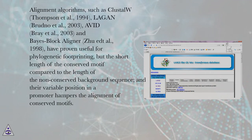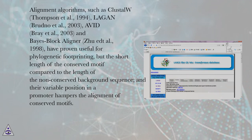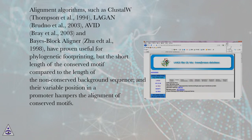Alignment algorithms such as ClustalW (Thompson et al., 1994), LAGAN (Brudno et al., 2003), AVID (Bray et al., 2003), and VASE Block Aligner (Gedt et al., 1998) have proven useful for phylogenetic footprinting, but the short length of the conserved motif compared to the length of the non-conserved background sequence and their variable position in a promoter hampers the alignment of conserved motifs.